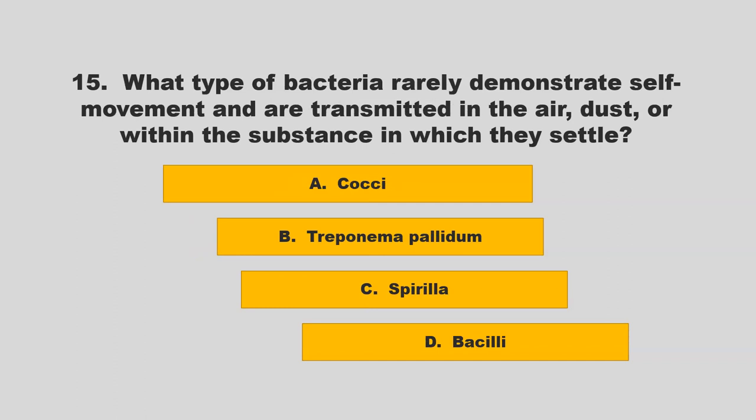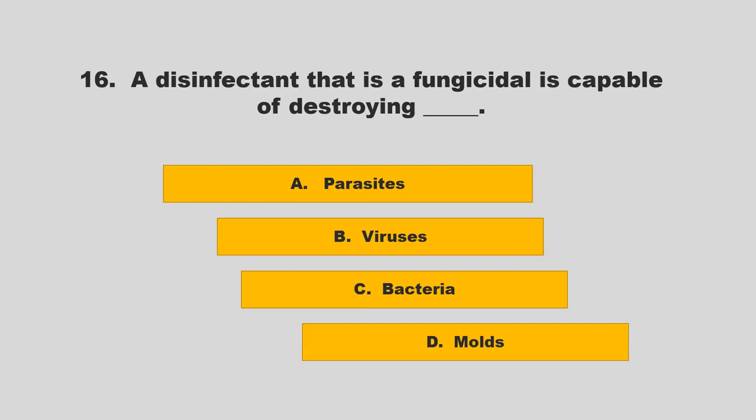What type of bacteria rarely demonstrate self-movement and are transmitted in the air, dust, or within the substance in which they settle? Options: cocci, Tryponema pelletum, spirilla, or bacilli. The correct answer is A: cocci.